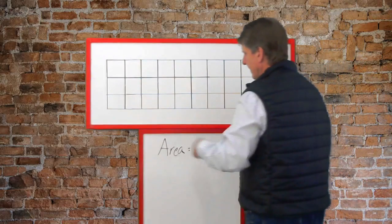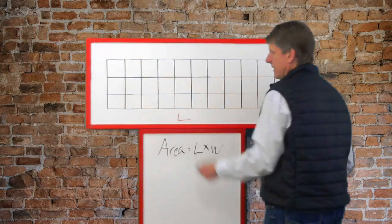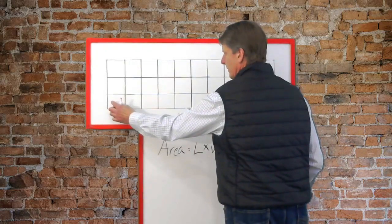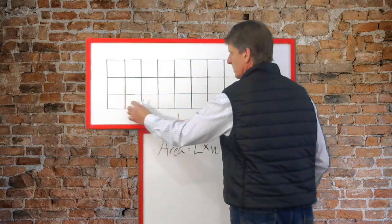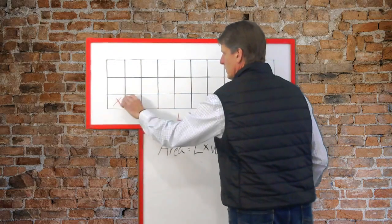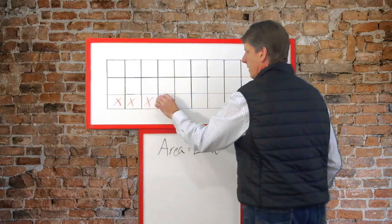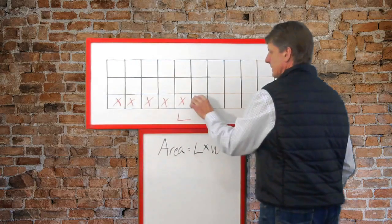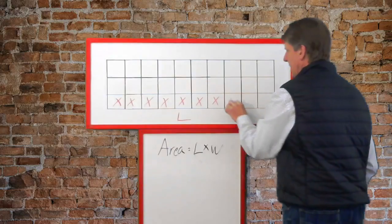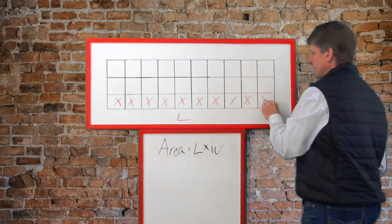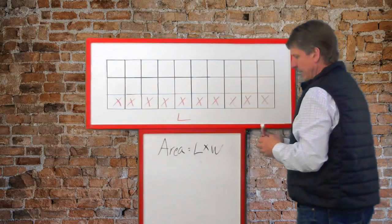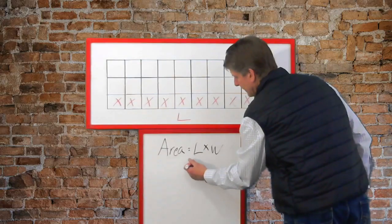Its length will be here. Then we just go ahead and we count the number of units or squares. One, two, three, four, five, six, seven, eight, nine, ten. Let's plug that in since we have it. Ten.